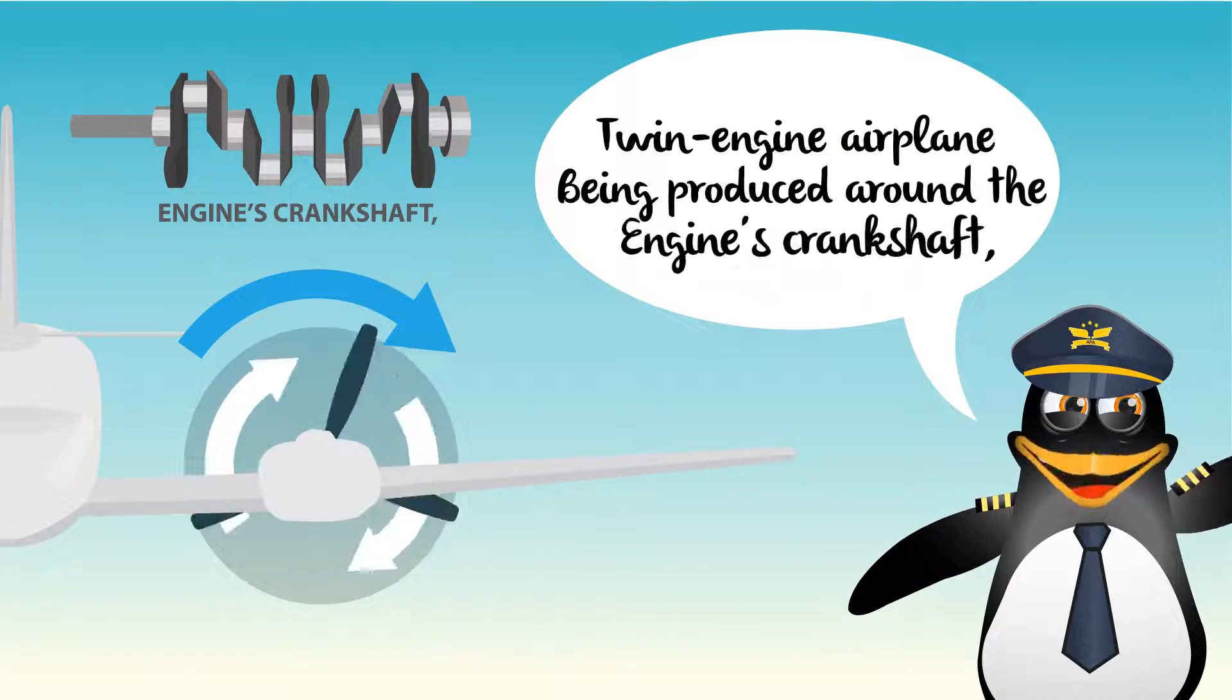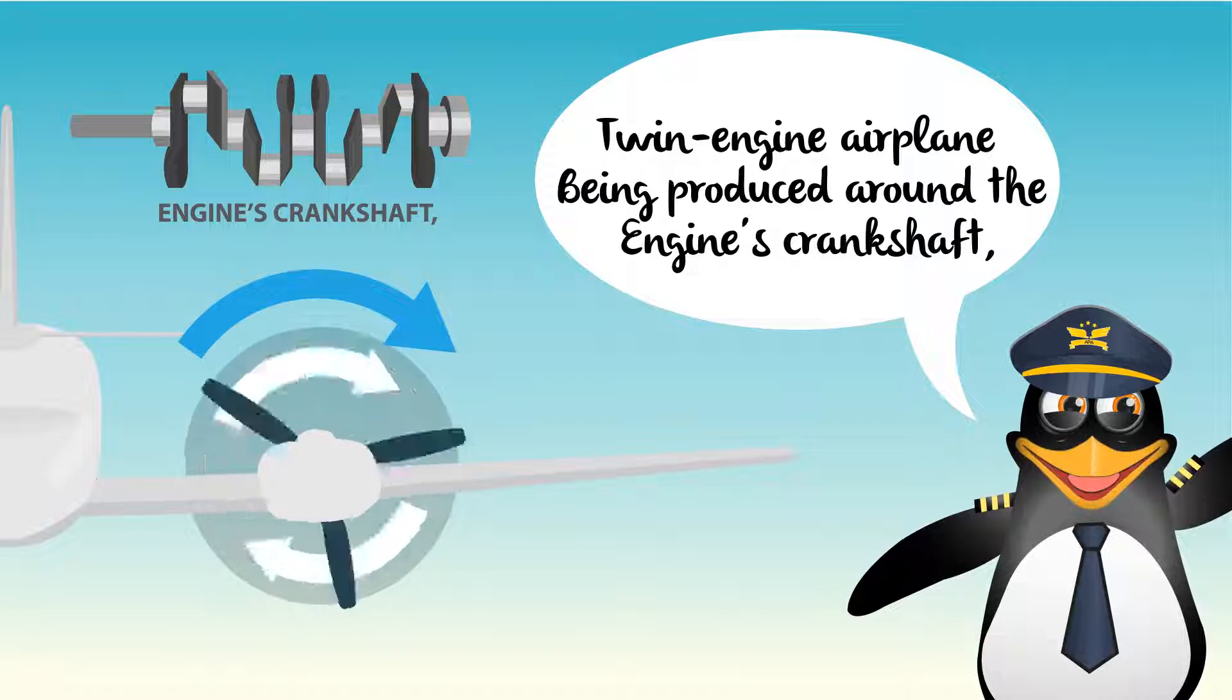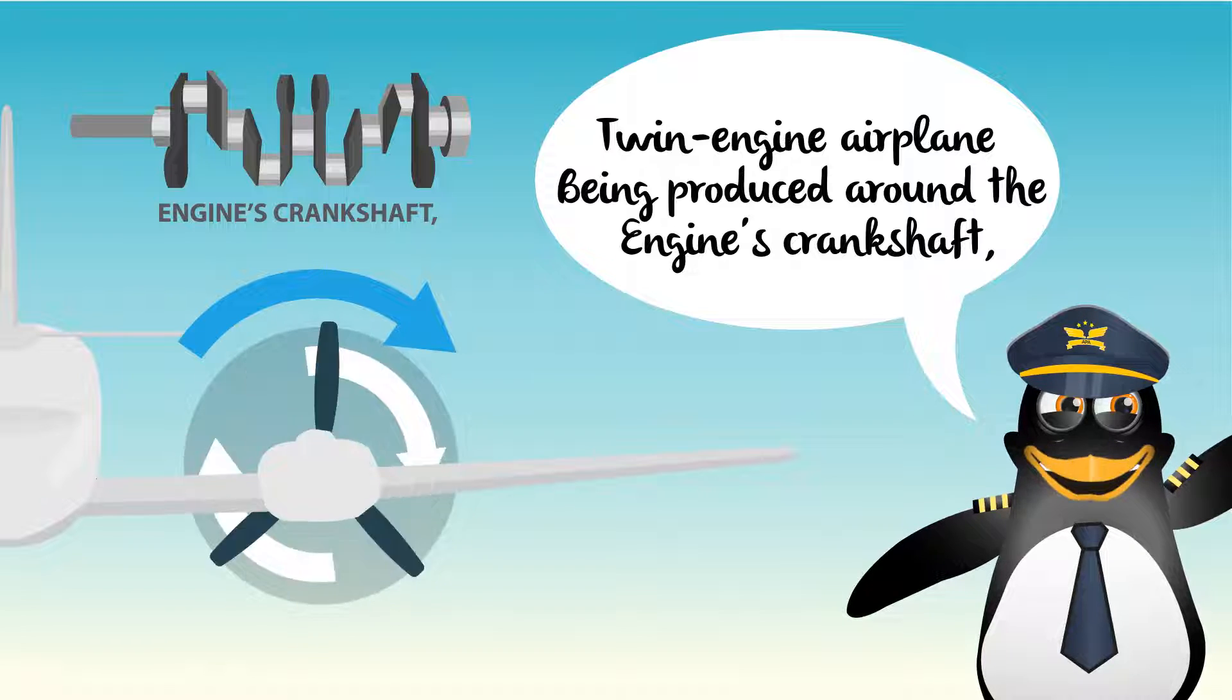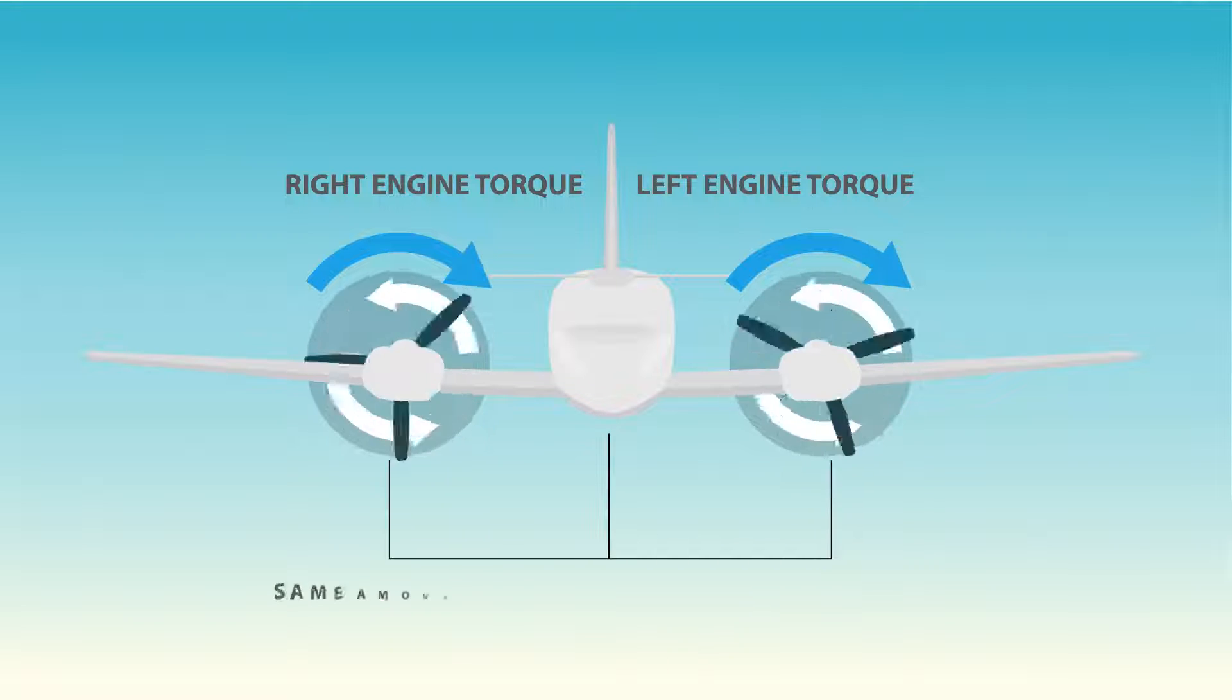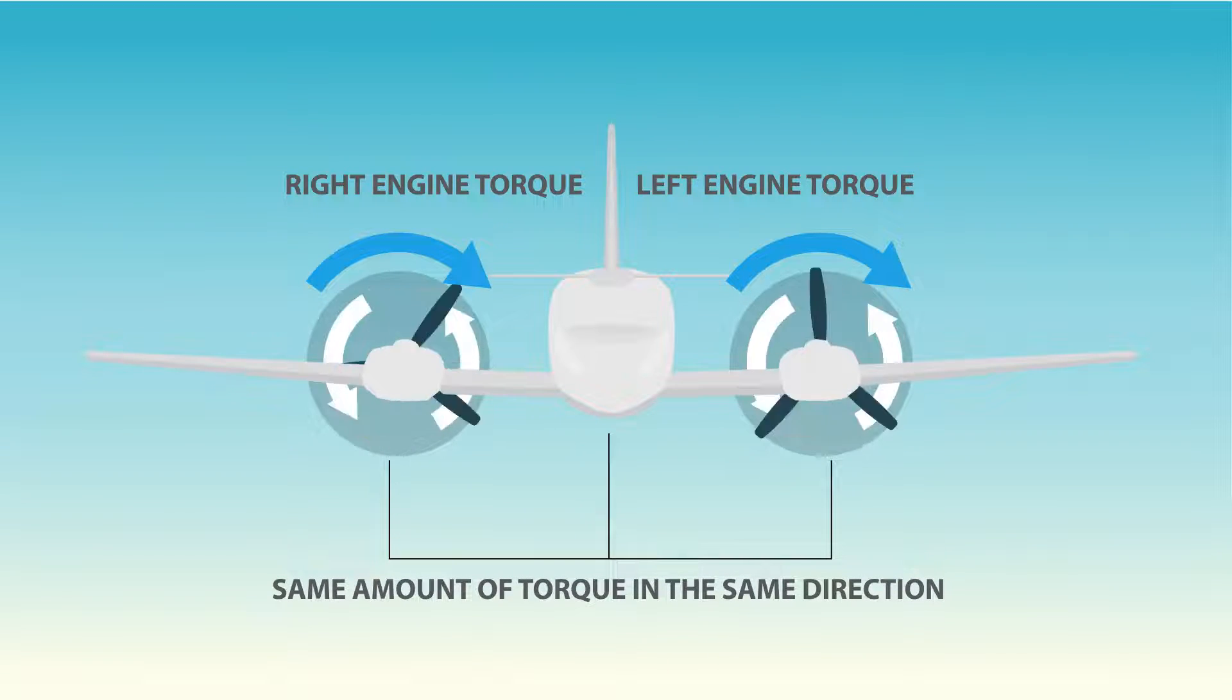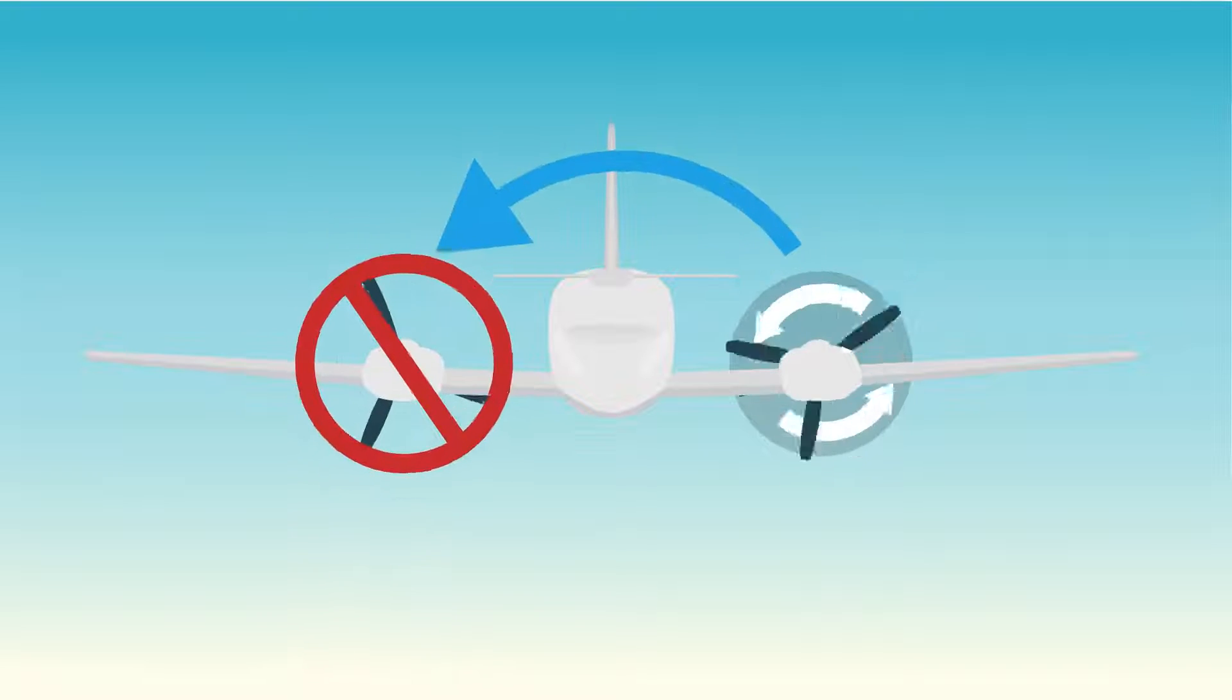With the effect of torque in a conventional twin-engine airplane being produced around the engine's crankshaft, and both are the same distance from the aircraft's centerline, neither engine would be considered the critical engine by definition, since each engine is creating the same amount of torque in the same direction. But when we consider torque along the asymmetrical thrust resulting from power loss on one engine, we see why torque can be another factor.